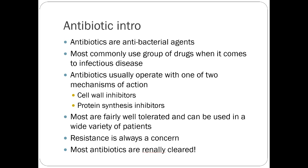Antibacterial agents have a couple of primary mechanisms of action. They generally fall into cell wall inhibitors — which prevent the bacteria from forming a functional cell wall — and protein synthesis inhibitors, which work intracellularly to prevent replication of protein structures within the bacterial cell. Some antibiotics also work on DNA replication. Those are the two major mechanistic subtypes.